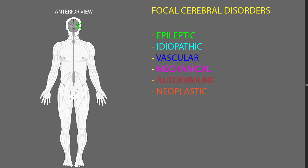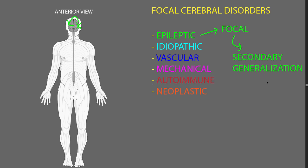For instance, in one cerebral lobe, and they can either stay in that spot or some people will have their seizures spread to involve most of the cerebral cortex on both sides of the cerebrum. There are a number of names for these types of seizures. We can call these focal seizures, or there's an older term of partial seizures, and then if they spread from their focal area to most of the cerebral cortex on both sides, we call that secondary generalization.